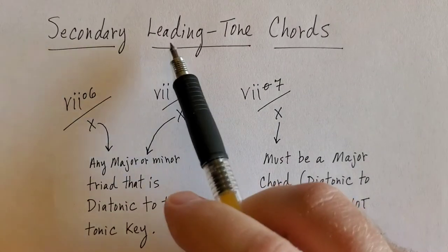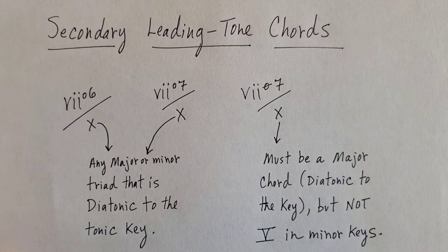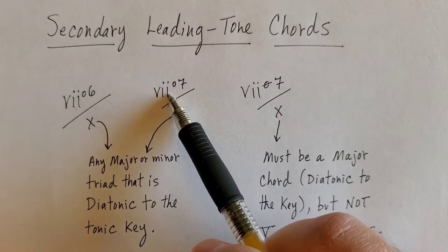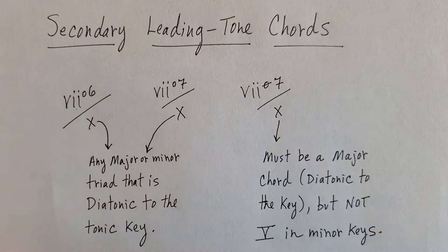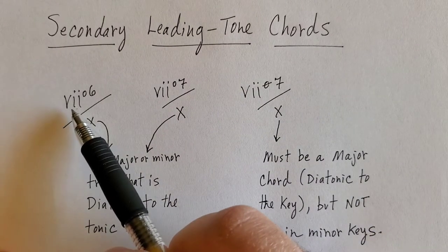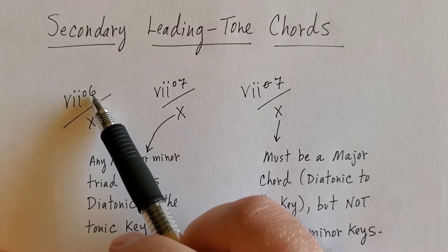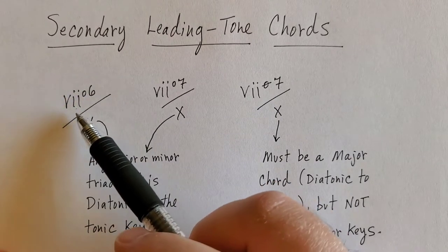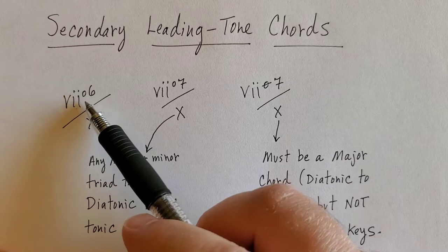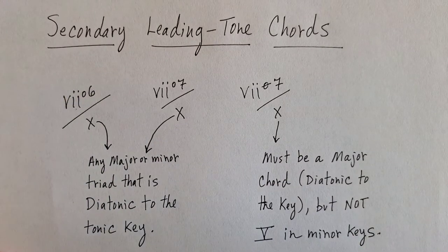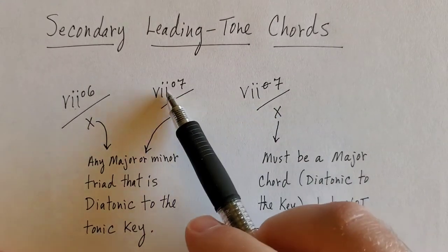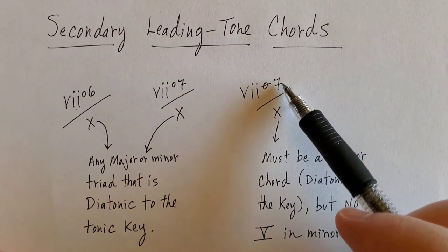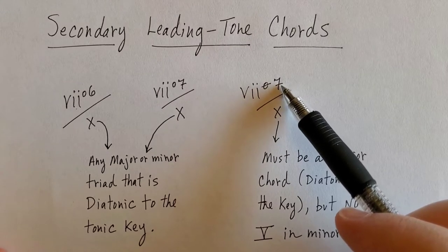When it comes to secondary leading tone chords, you're talking about a leading tone chord that is either a diminished triad, a fully diminished seventh chord, or a half diminished seventh chord. Usually when you have a triad that's diminished it's found in first inversion — that's more typical. So this is pretty standard: viio6. You might find viio, and rarely viio6/4, but usually you're going to find viio6 for the triad. For the seventh chords you'll find these in any inversion: 7, 6/5, 4/3, or 4/2.